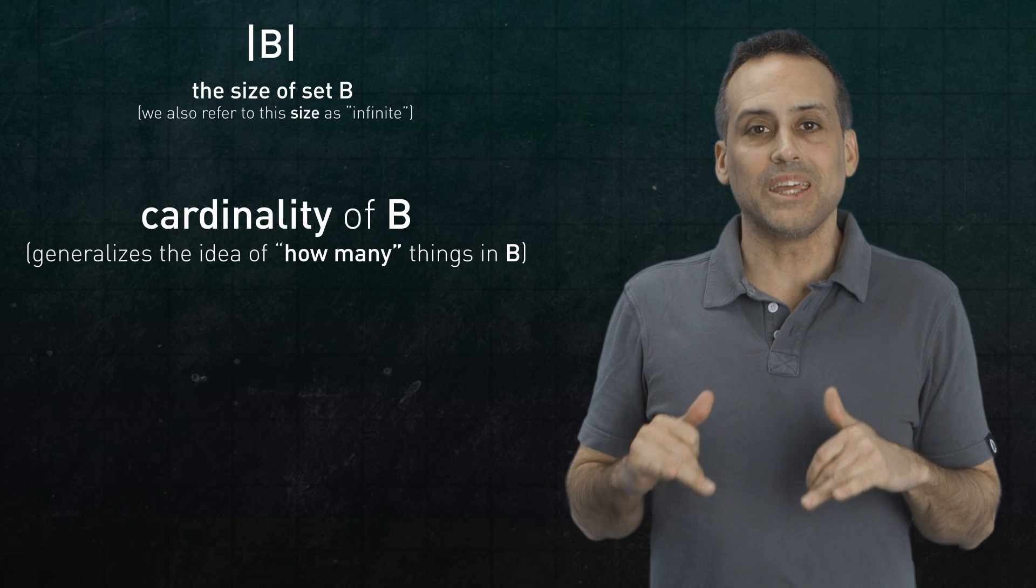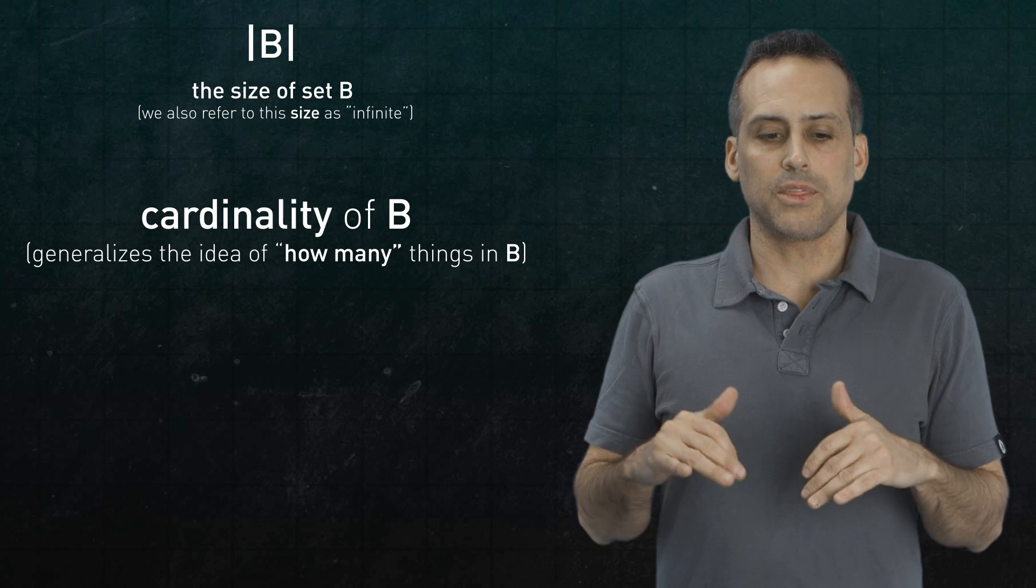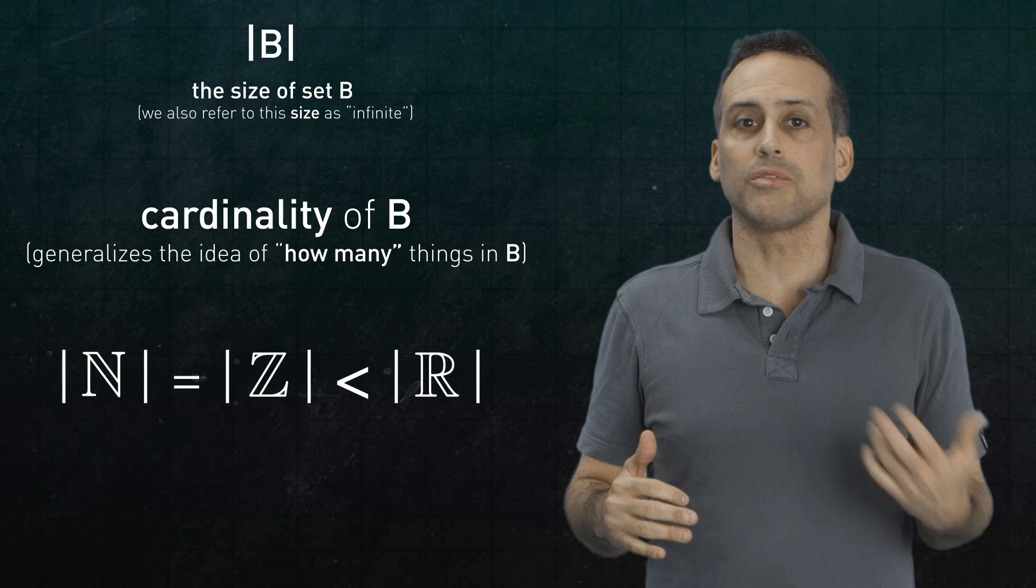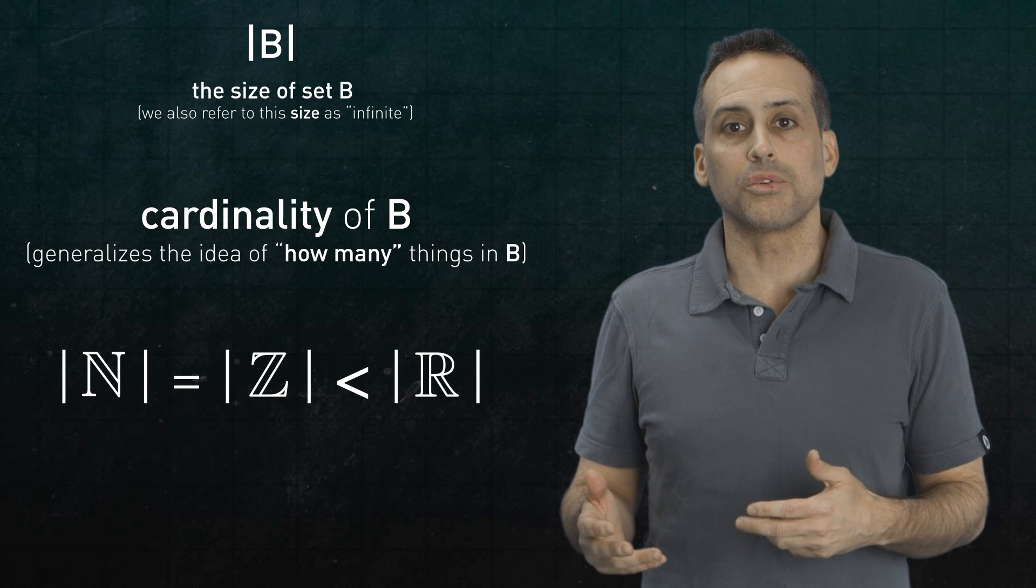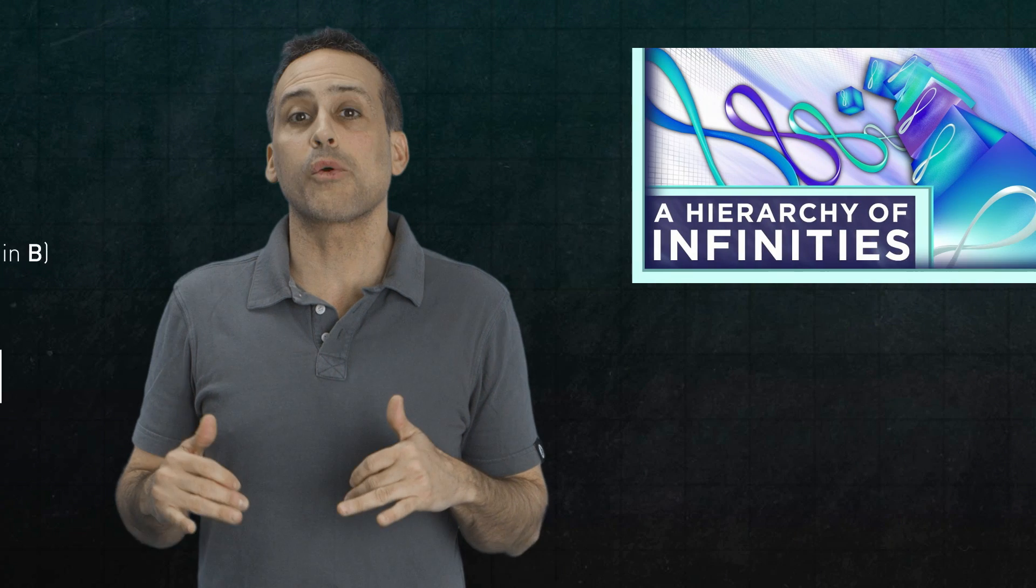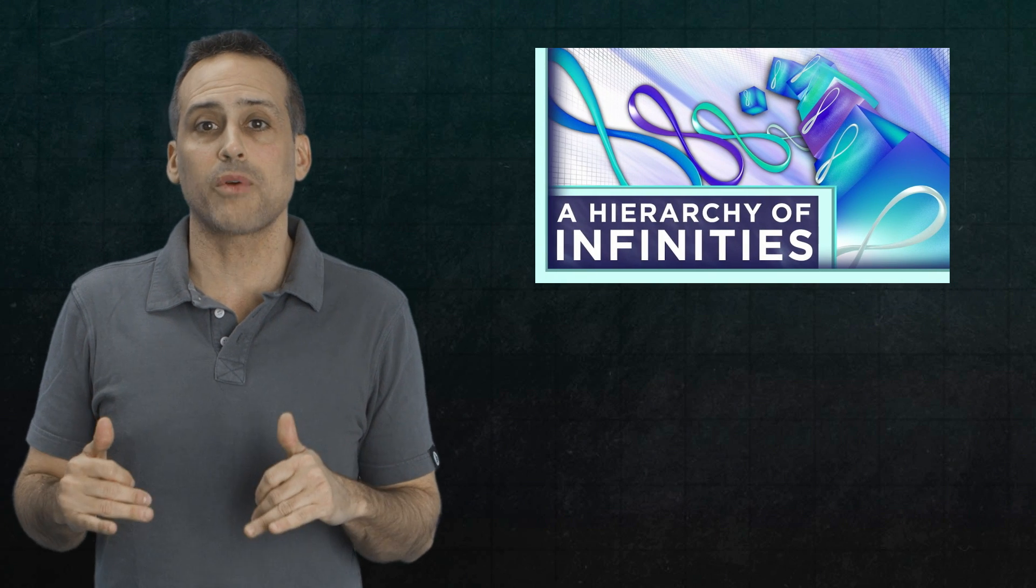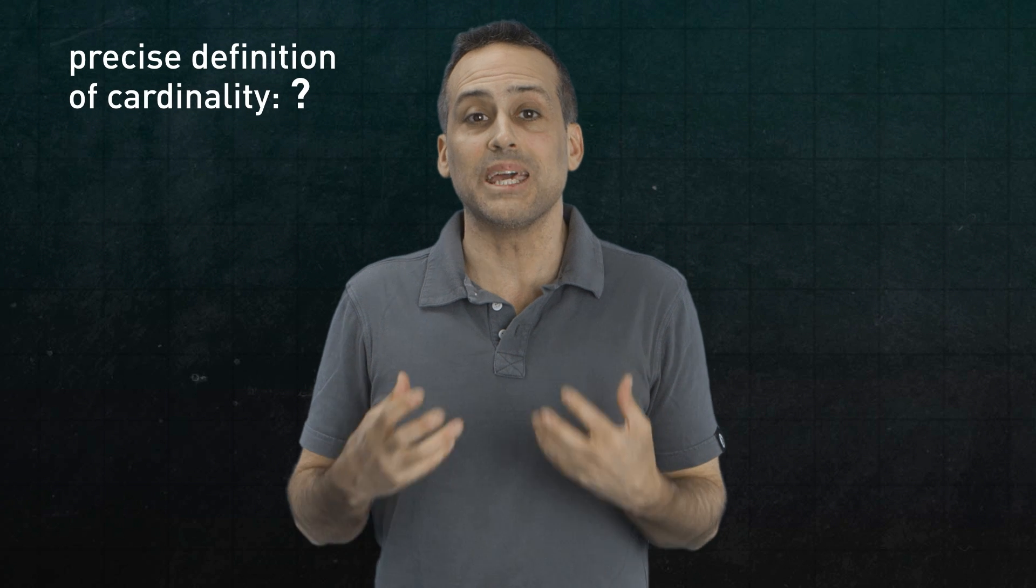Once you get a handle on infinite sizing, you end up with some pretty counterintuitive results, like that the set of the natural numbers and the set of all integers agree in cardinality, while the cardinality of the real numbers is greater. Kelsey discussed a lot of this in a previous episode about the hierarchy of infinities. You'll notice in that episode that Kelsey never defined the cardinality of an infinite set, never said what cardinality actually is explicitly.